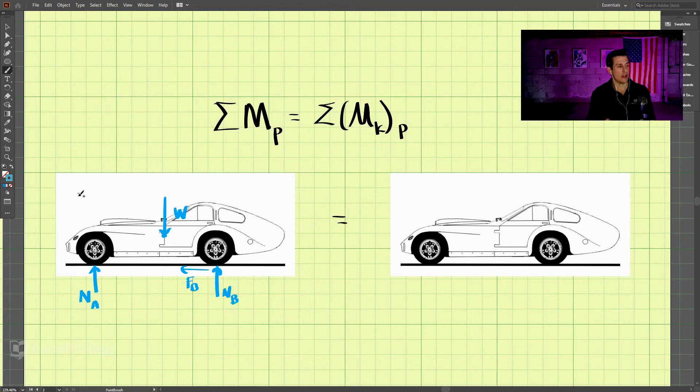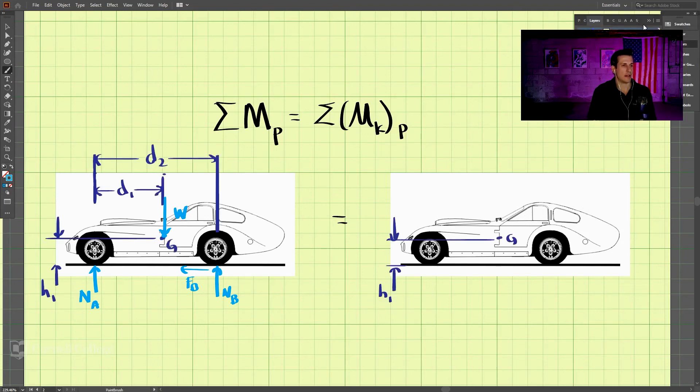Okay, so there is our free-body diagram, and let's bring up the dimensions now. And let's take the moments. So if we take some of the moments around A, we would get NB acting a distance of D2 away minus W acting a distance of D1 away.